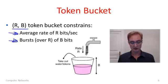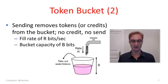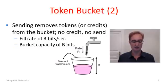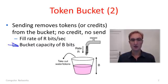A token bucket is usually explained in terms of a bucket analogy. To implement a token bucket, think of having a bucket with capacity or size B bits — that's how much water or tokens or credits it can hold. The bucket is filled up by a tap that runs at a rate of R bits per second — that's how quickly tokens or credits are going into the bucket.